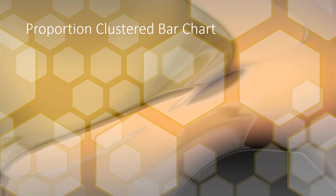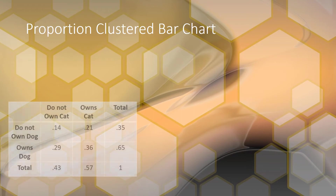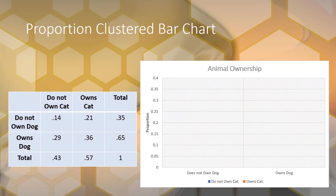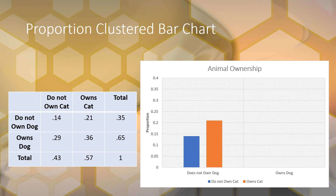You can also make a proportion clustered bar chart — you just need your proportion contingency table first. It looks very similar to the frequency chart, but instead of frequencies on the y-axis, you have proportions. The bars themselves will look essentially the same; only the y-axis changes.